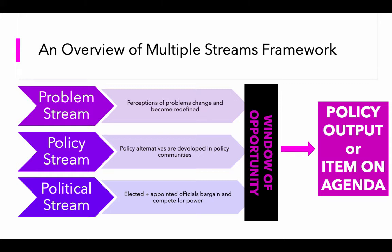We have three streams within which things exist simultaneously: the problem stream, where perceptions of problems change and become redefined; the policy stream, where policy alternatives are developed in policy communities; and the political stream, which we can think of as elected and appointed officials bargaining and competing for power. Ultimately, these streams become coupled either because of certain events, or certain events plus the work of policy entrepreneurs, and a window of opportunity opens — offering a chance, not a certainty, for a policy output or getting an item on the agenda.